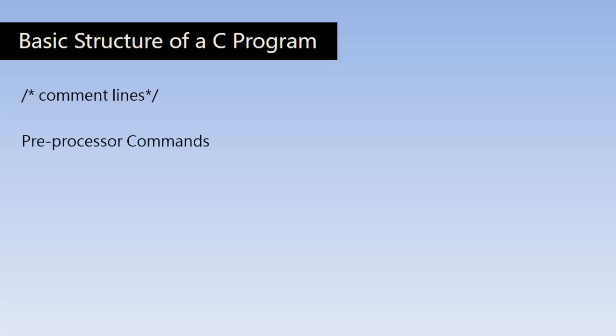The first section of executable C program is the preprocessor commands, also called preprocessor directives. They normally start with the hash symbol or pound symbol and contain the useful library functions for your program. The next statement is main() with a pair of empty parentheses.